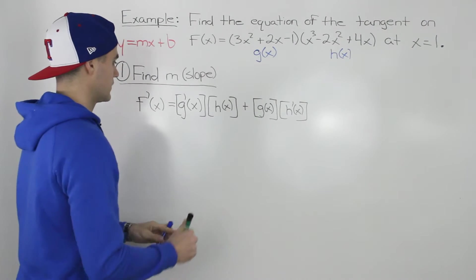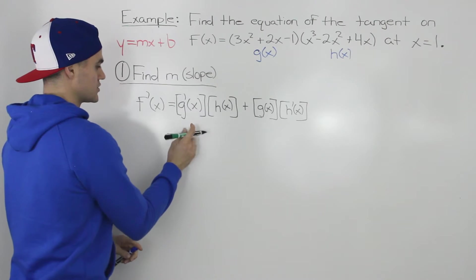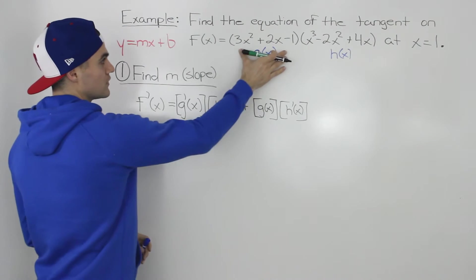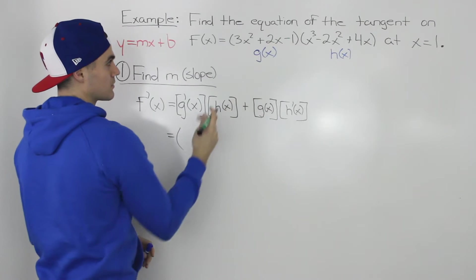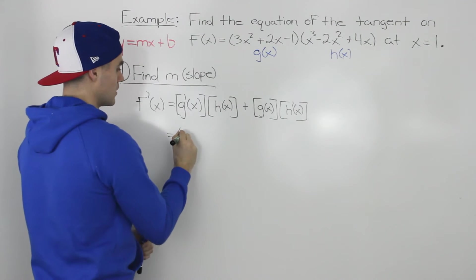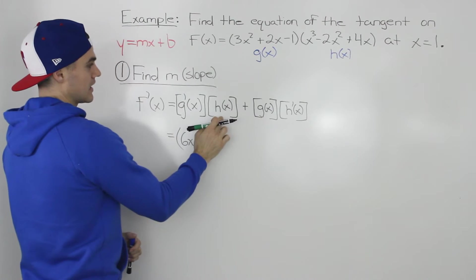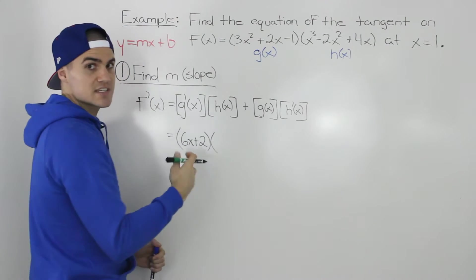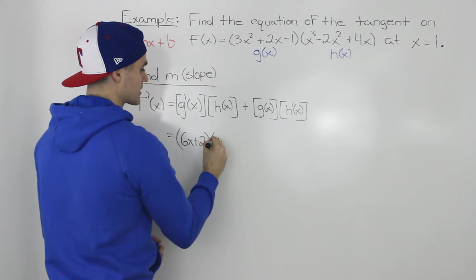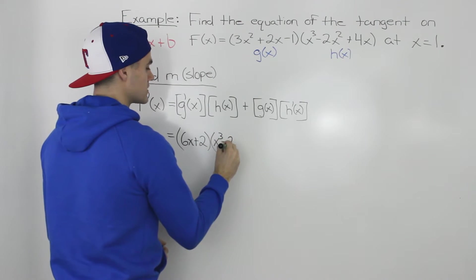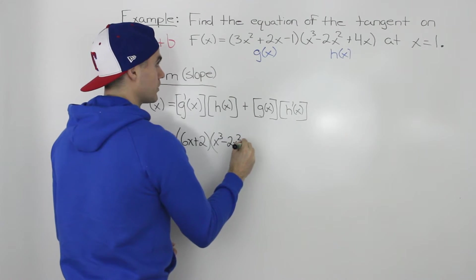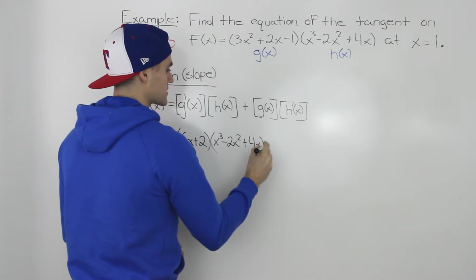So let's fill these in. The first one is g prime of x, the derivative of the first function. If we take the power rule on each of those terms, we would end up with 6x plus 2. Next is h of x, which just stays as it is. So it's x to the power of 3 minus 2x squared plus 4x.